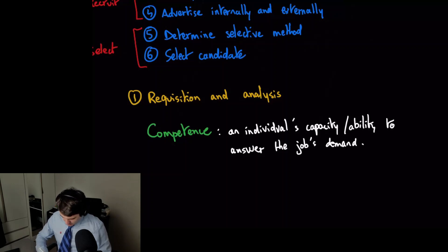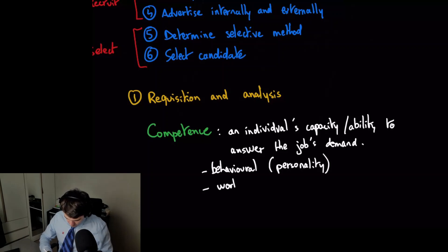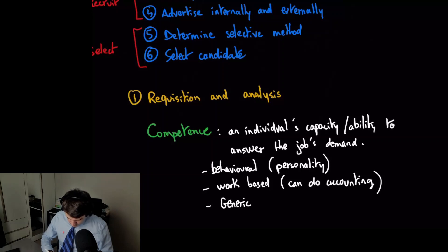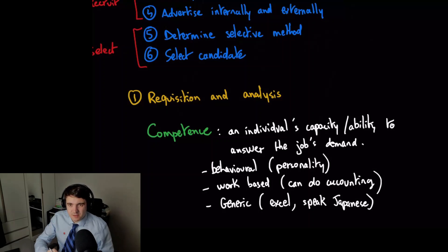We have different types of competence. We have behavioral competence, meaning personality — how does he fit with other people, is he extroverted? We have work-based competence, so for example he can do accounting work, make financial statements, or repair a car. And then we have generic competence — not specific to a single job, for example Excel or speaking Japanese. Things like that are not very specific to one job only.